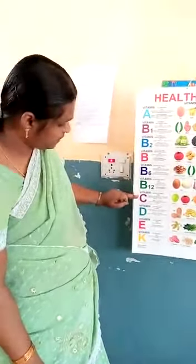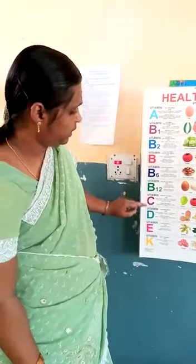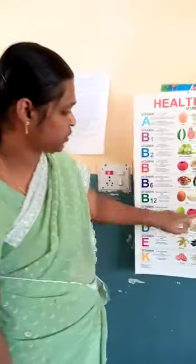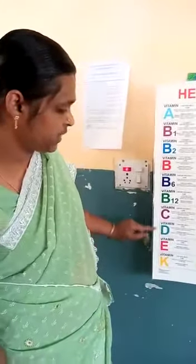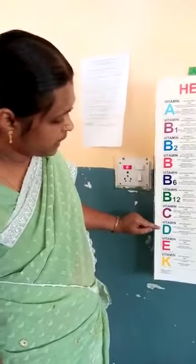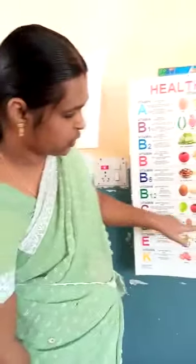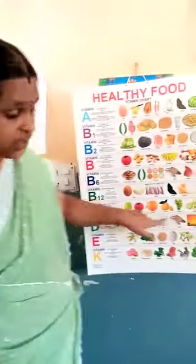Then comes vitamin C, which is a water soluble vitamin, and all the sources you can see very clearly here. Vitamin D is a fat soluble vitamin — these are the sources of vitamin D.